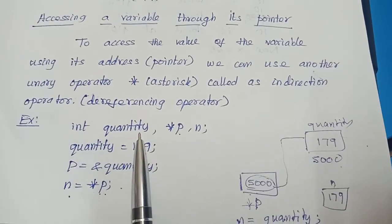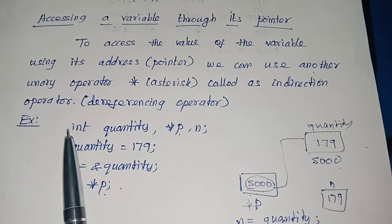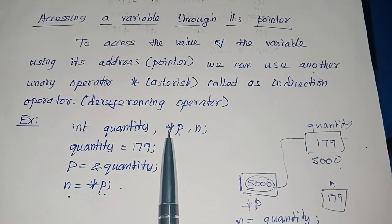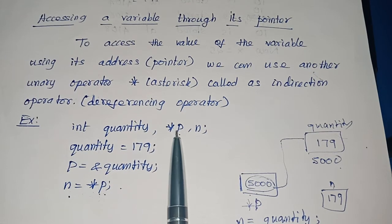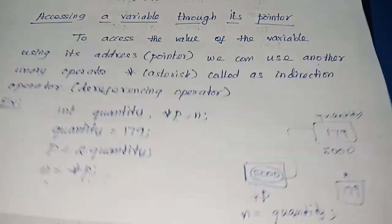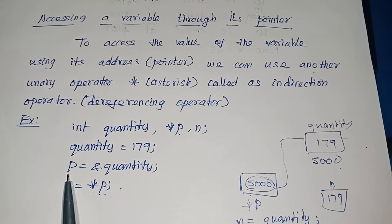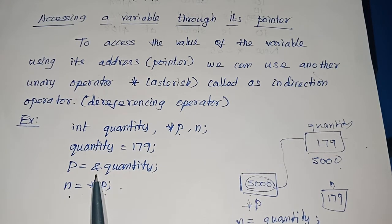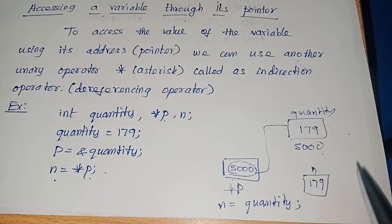Look at this example. Here quantity and n are integers and p is a pointer variable. The star at the point of declaration represents that p is a pointer variable to the compiler. We are initializing quantity as 179 and collecting the address of quantity using the address operator. Now I want to copy the value — quantity is 179 — to n.